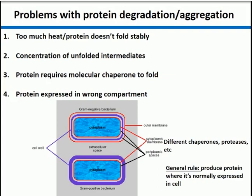There's another thing that can influence how your protein folds — the localization of the protein. All of the processes we've been talking about in bacteria are in the cytoplasm, where the DNA, RNA polymerases, nucleotides, ribosomes, tRNA synthetases, and everything else are located. There are a lot of proteins that don't fold very well in the cytoplasm, which sounds strange because the cytoplasm is supposed to be nicer for folding — it has all these chaperones as opposed to the periplasm and extracellular environment which are full of proteases. But there's a general rule of thumb: produce the protein where it's normally expressed in the cell.